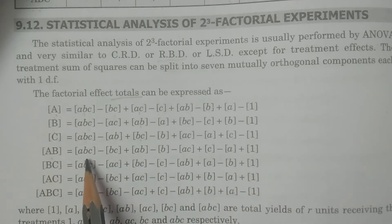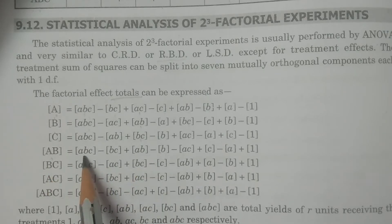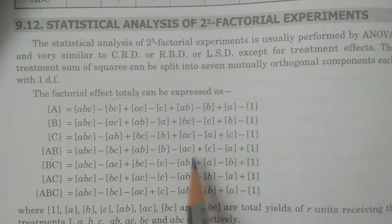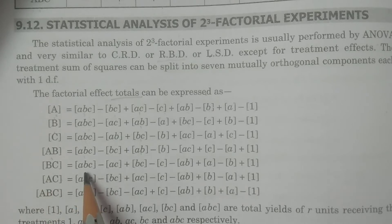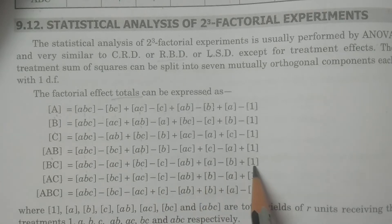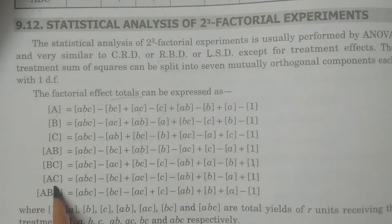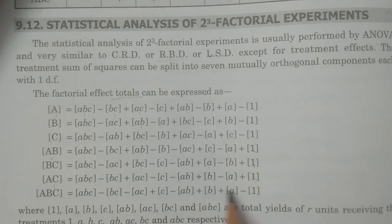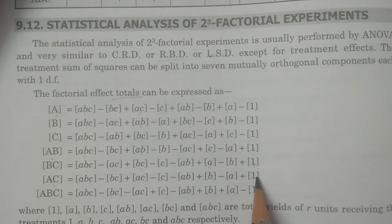For interaction [AB]: combinations ABC, AB, C, and 1 have positive signs — I'm sorry, ABC, AB, C, and 1 have positive signs; remaining are negative. For [AC]: combinations ABC, AC, B, and 1 have positive signs; remaining are negative.